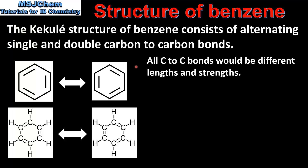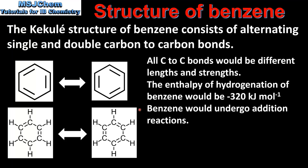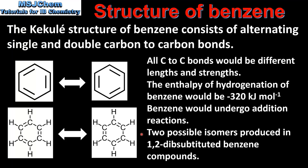If these resonance structures represented the actual bonding in benzene we'd expect the following: all carbon to carbon bonds in benzene would be different lengths and strengths; the enthalpy of hydrogenation of benzene would be -320 kJ/mol; benzene would undergo addition reactions; and two possible isomers would be produced in 1,2-disubstituted benzene compounds.